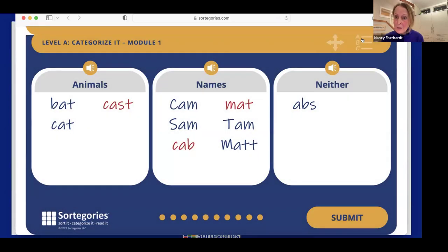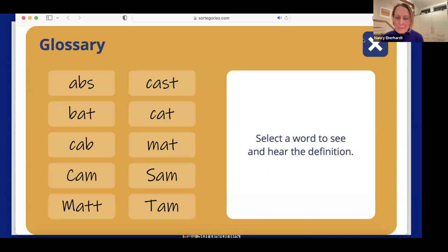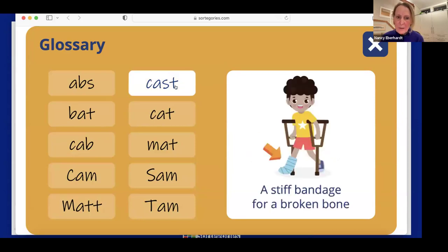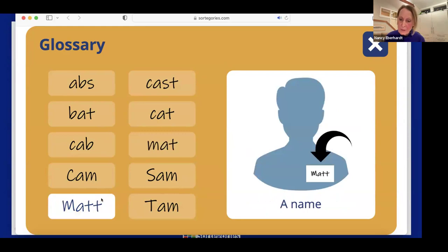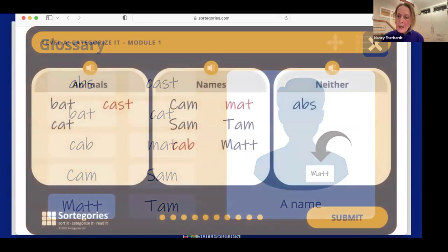So I've done all the words. I'm going to submit my answer. Try words in blue are in the right category. Try again with the words in red. Now, before I try again, I've made a mistake with these. I don't know something about the word. So I can come up and use the glossary, which is the word to see and hear the definition. So I put this in animals because I thought it was 'cats.' Cast, a stiff bandage for a broken bone. Okay, and then I put 'mat' in the names because I thought it was. A small piece of carpet for the floor. And then Matt, there's the other name.